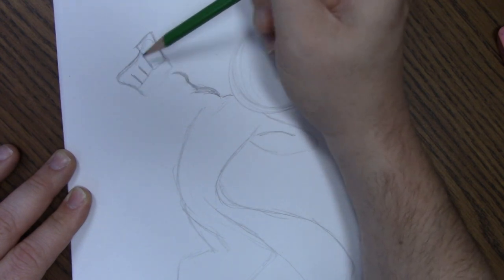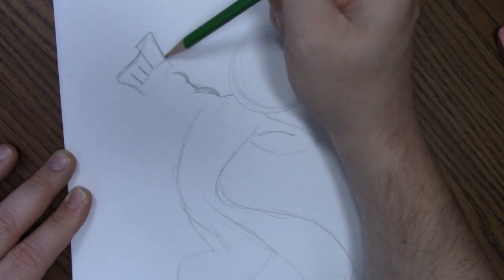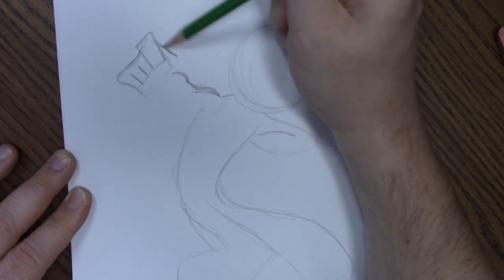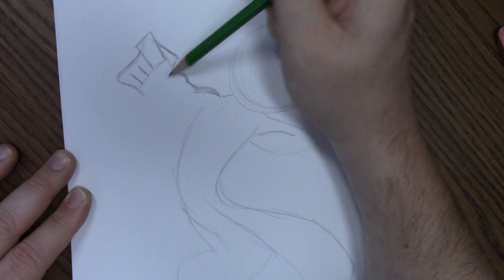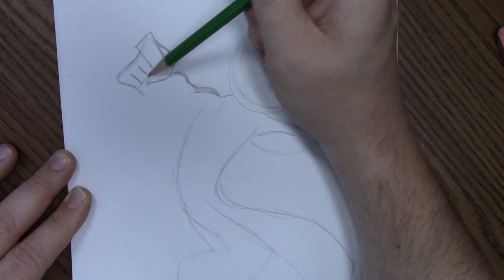So pointer finger, other fingers falling in line, and then this is going to be her thumb coming down and bending back up towards the fist.